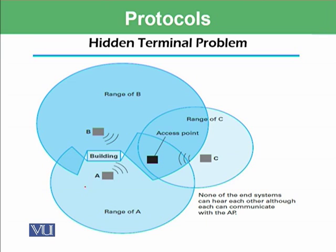Here are three computers, A, B, and C, and this is the access point with which they want to communicate. Computer C's range extends to a certain point, and computer B's range extends to a certain point, but beyond that point the range of computer B's signal is dropped. This means computer C cannot listen to signals initiated by computer B or computer A, and similarly, others are not able to listen to signals initiated by other network devices.